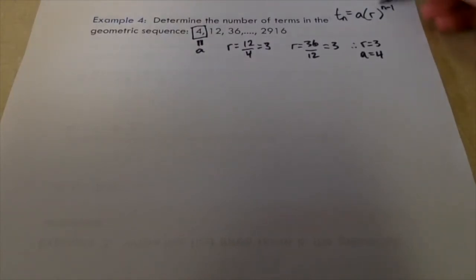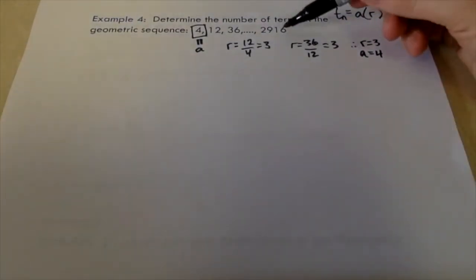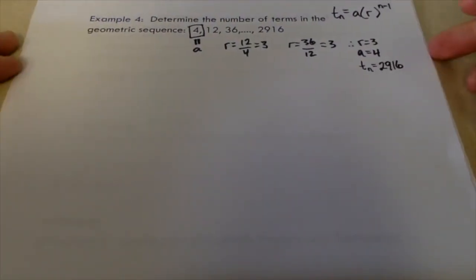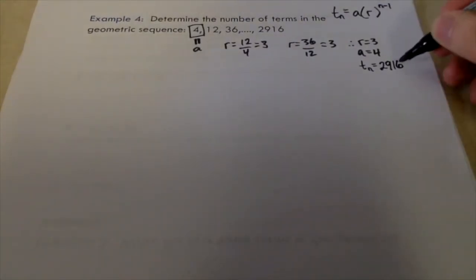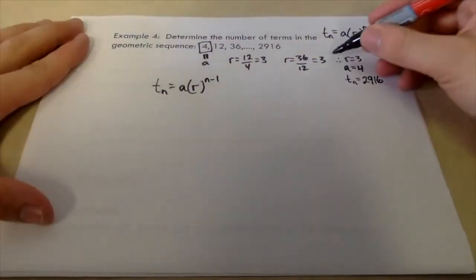So when we sub in the total number of terms in our sequence, we should get 2,916. This is going to be our tn term. If we sub that in, we should be able to solve for the number of terms that get us to that point. I'm going to sub in all of this information here.